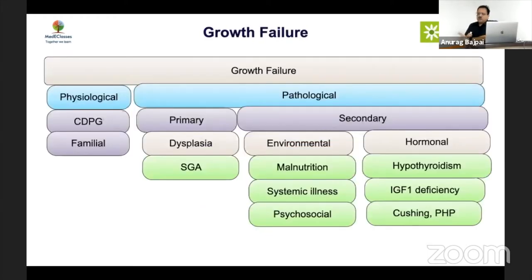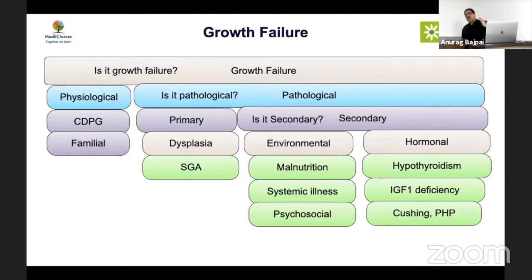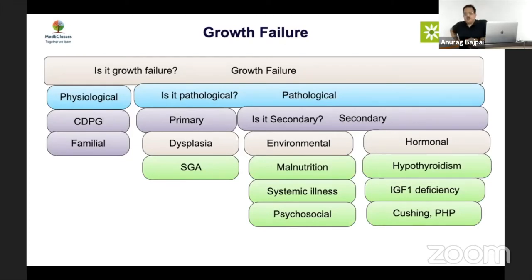Three key questions must be answered: Is it growth failure? Is it physiological or pathological — 80% will be physiological for a pediatrician. Is it primary or secondary? Primary means dysplasia and SGA. Physiological refers to constitutional delay and familial short stature. To decide, check if the child is short for his parents — if not, consider familial. Ask about parental delayed puberty or delayed menarche for CDGP, but remember CDGP is a diagnosis of exclusion and pathological causes must be ruled out.